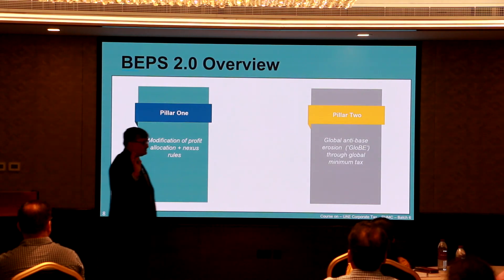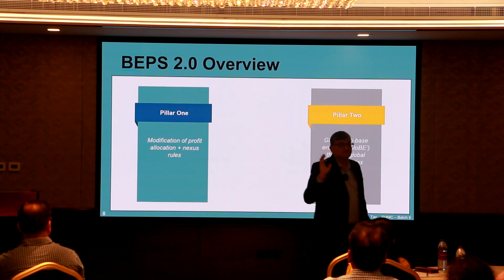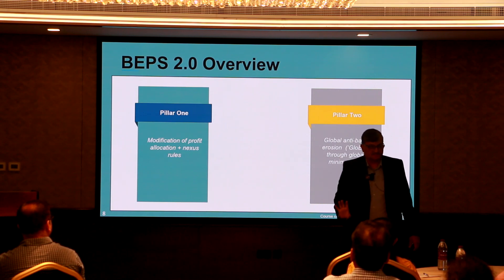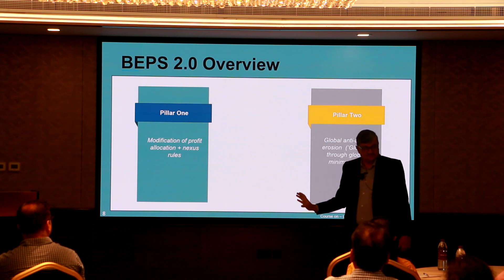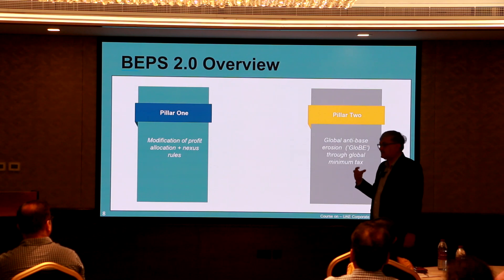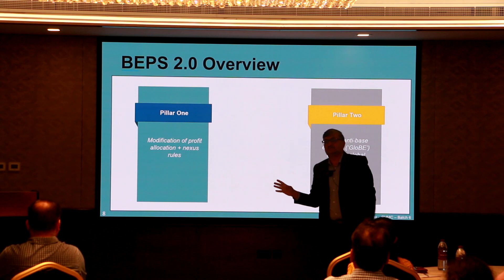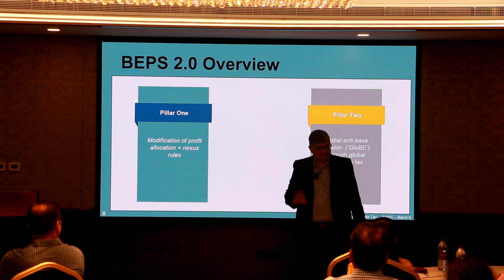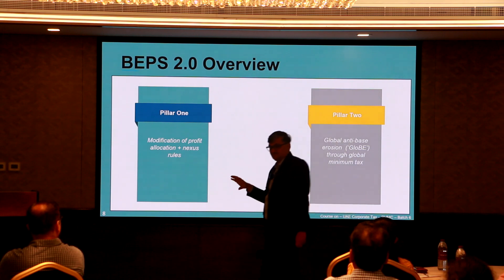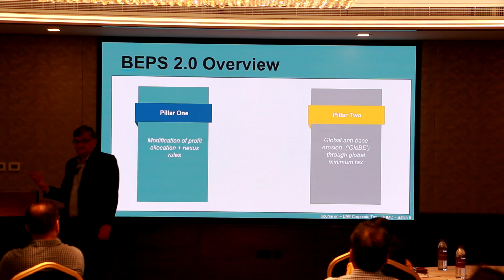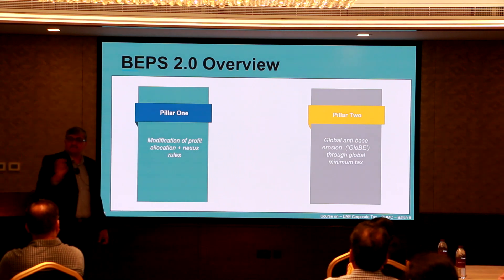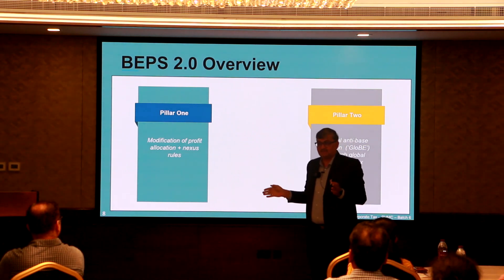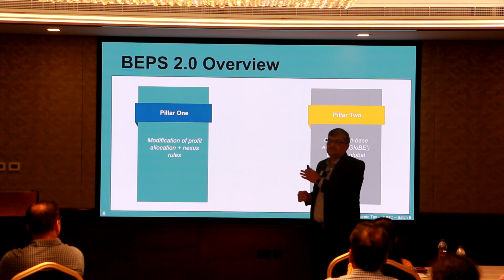Pillar One is talking about modification of the profit allocation through an excess route. It addresses all the companies which are in the digital economy, which work through a digital mode of business. What they are trying to say is: you all operate everywhere in the world through your websites and others. We will come to the ultimate parent company and collect tax on a certain basis where minimum profits are defined. Whatever you earn over and above that, a certain portion is collected as additional tax by the ultimate parent entity's country, which then redistributes that tax to the markets from where you earn your revenue.